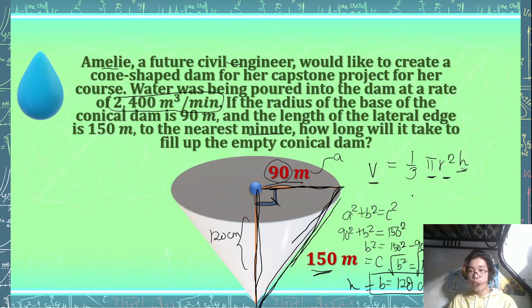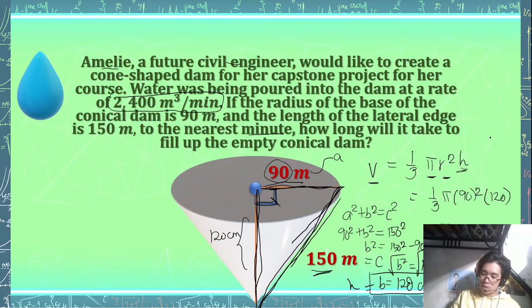So we can now solve for the volume of this tank, of this conical tank. That's going to give us 1/3 π times 90² multiplied by the height, which is 120. And what's 90²? So that's going to give us 8,100.